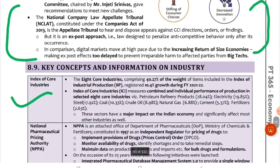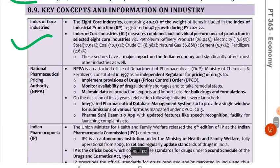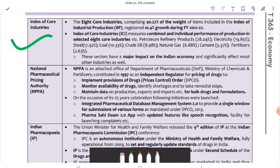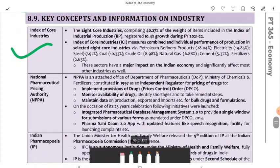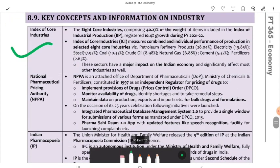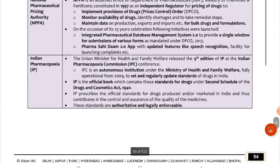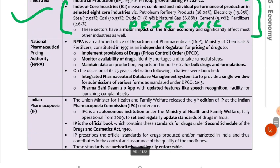The Index of Core Industries has a weight of 40.27% in the Index of Industrial Production (IIP). The 8 core industries are: refinery products (highest weight), electricity, steel, coal, crude oil, natural gas, cement, and fertilizers. Make a mnemonic to remember these. That's all for this session on the service and industry sector. If you have any queries related to this, please comment. Thank you so much, keep loving our channel.